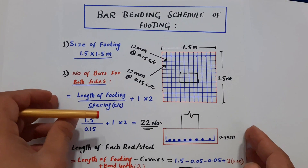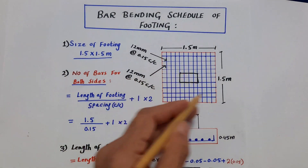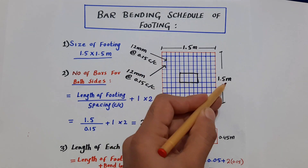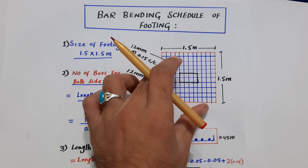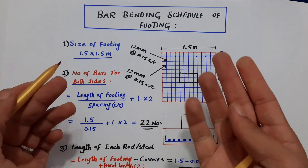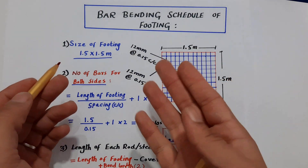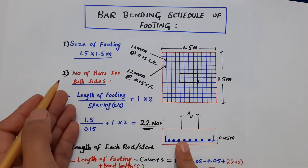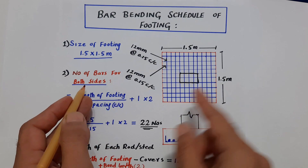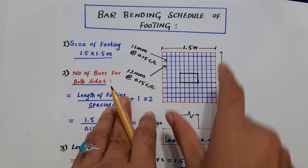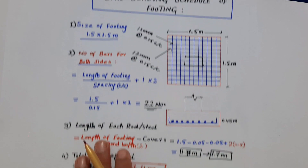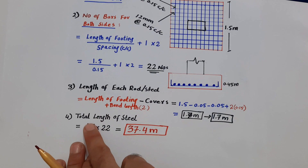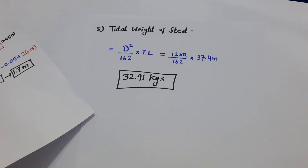Here is the RCC footing with a size of 1.5 by 1.5 meters. I will complete the total quantity of steel for RCC footing in five steps: the first is size of footing, the second is number of bars for both sides, the third is length of each steel rod, the fourth is total length of steel, and the last is total weight of steel.